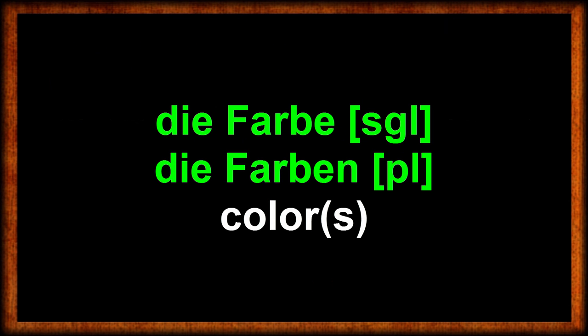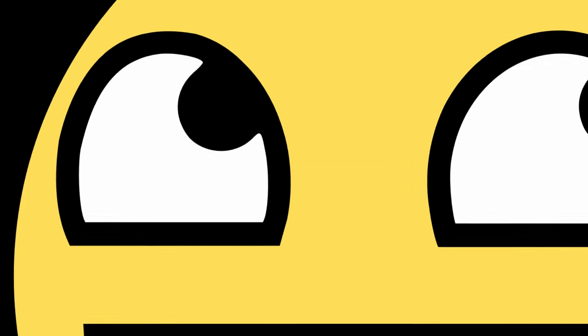Here are a few examples of colors in German. Schwarz — black. Weiß — white. And I don't really want to argue about the question whether black and white are colors by definition; I just want to teach you the German words. Grau — grey.